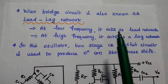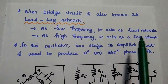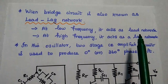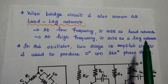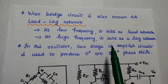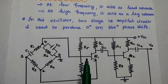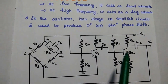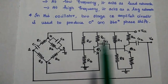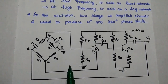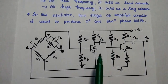The Wainbridge circuit is also known as a lead-lag network. At low frequency, it acts as a lead network, meaning the phase difference is leading. At high frequency, this circuit acts as a lag network, where lead and lag refer to the phase delay. In this oscillator, the two-stage CE amplifier circuit is used to produce 0 degrees or 360 degrees of phase shift, which is the required condition for sustained oscillation. This is the overall diagram of the Wainbridge oscillator circuit, showing the feedback circuit and the two-stage CE amplifier circuit.